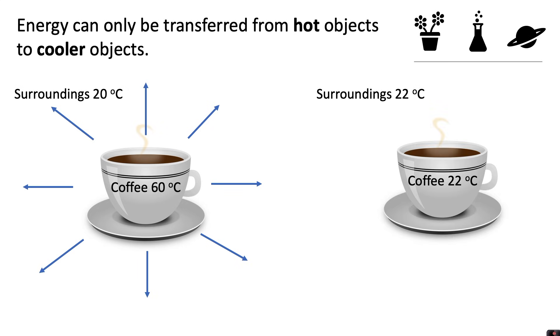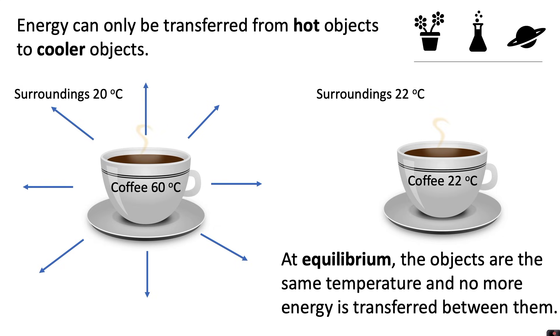This will happen until an equilibrium is reached. As you can see, the coffee has cooled down to 22 degrees and the surroundings have warmed up slightly to 22 degrees, so they are now both at the same temperature. At equilibrium, the objects are the same temperature and no more energy is transferred between them.